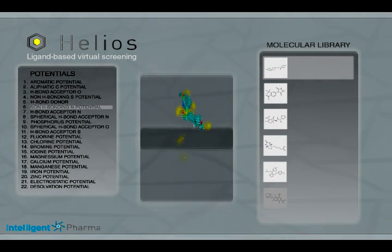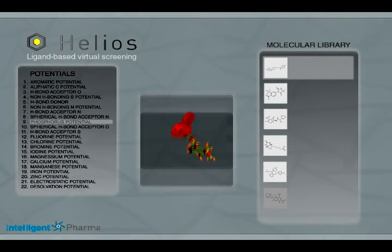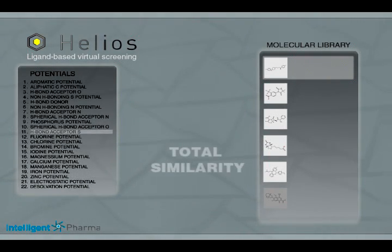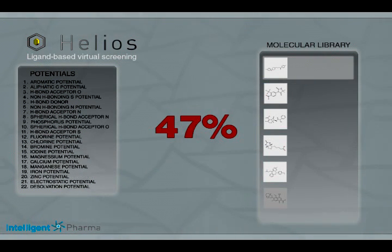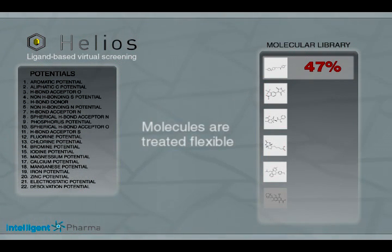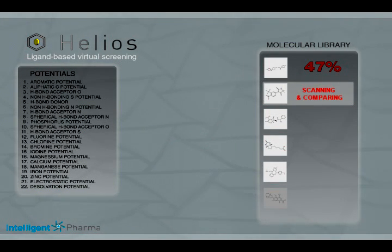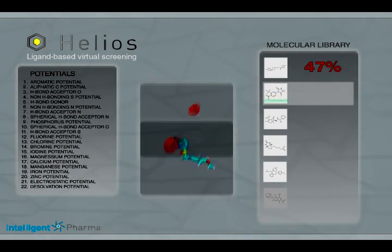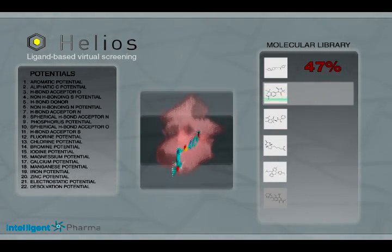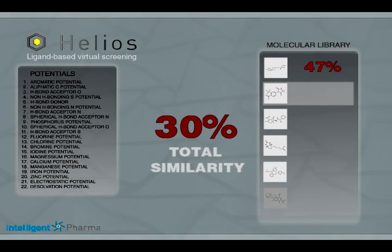In the comparison step, the reference molecular fields are maintained static, whereas the molecular fields of the compounds from the molecule database are treated as three-dimensional flexible entities. This is an important difference to other approaches which treat the compounds as non-flexible elements. Once the selected molecule database is ranked, the client can select the compounds with the maximum similarity indices to be, for example, screened in the laboratory.